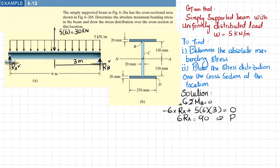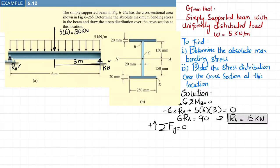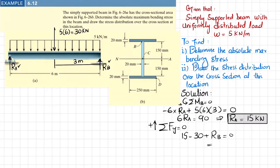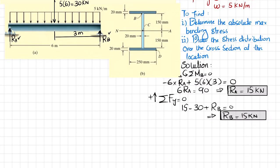From here, 6·Ra = 90, so Ra = 15 kN. Now using sum of forces in the y-direction equal to zero, taking upward as positive: Ra − 30 + Rb = 0, which gives 15 − 30 + Rb = 0, so Rb = 15 kN. Now we move toward drawing the shear force and bending moment diagram, because maximum bending stress equals maximum bending moment times c divided by I, and we need the maximum bending moment.